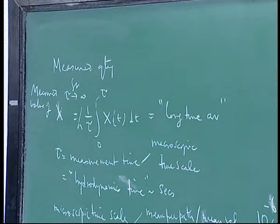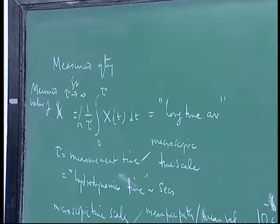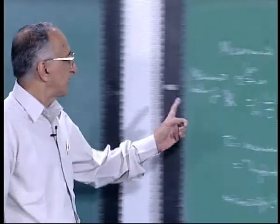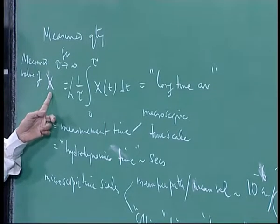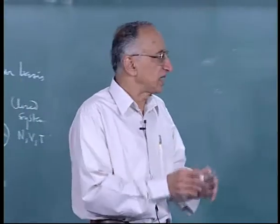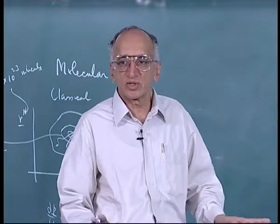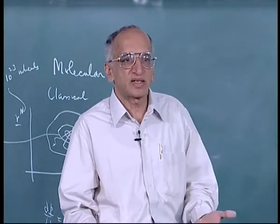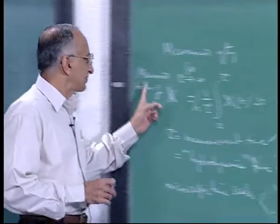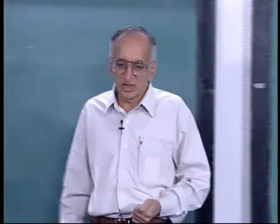Let us look at classical statistical thermodynamics. Some statements I have made are almost self-evident: the number of microscopic states compatible with the macroscopic state are very, very large. The measured quantity x has to be what is called a mechanical variable — x can be energy, x can be pressure, but x cannot be entropy. Entropy is not a variable defined in a given state; in fact, if you had only one state, the entropy of the system is zero.